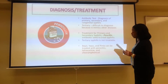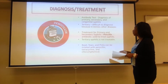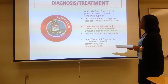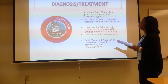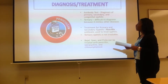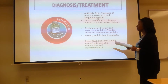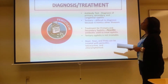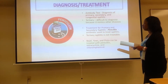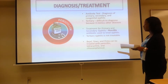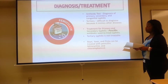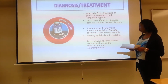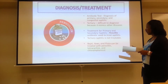For diagnosis and treatment: an antibody test can be given for primary, secondary, and congenital syphilis. Tertiary syphilis is difficult to diagnose because it mimics other diseases. Treatment for primary and secondary syphilis is the antibiotic penicillin. Tertiary syphilis is not treatable. The non-sexually transmitted types — bejel, yaws, and pinta — can be treated with penicillin, tetracycline, and chloramphenicol.